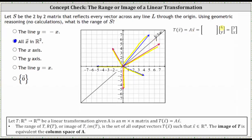If the input vector is (x, y), then the output vector is (y, x). We determine the transformation matrix by finding the transformations of the standard basis vectors E1 and E2 in R2. The transformation of E1 gives the first column. Starting with E1 = (1, 0), reflecting across Y equals X gives the output vector (0, 1), which is the first column of the transformation matrix.